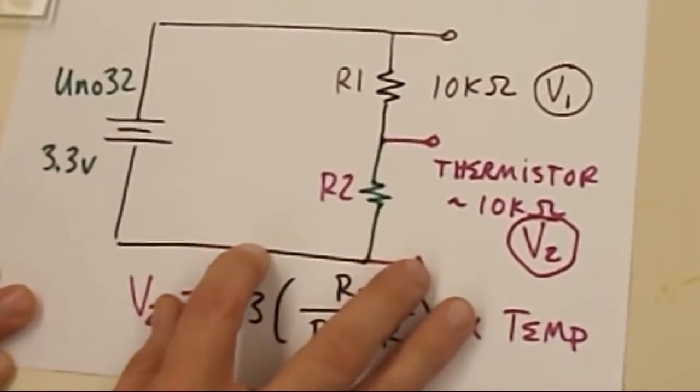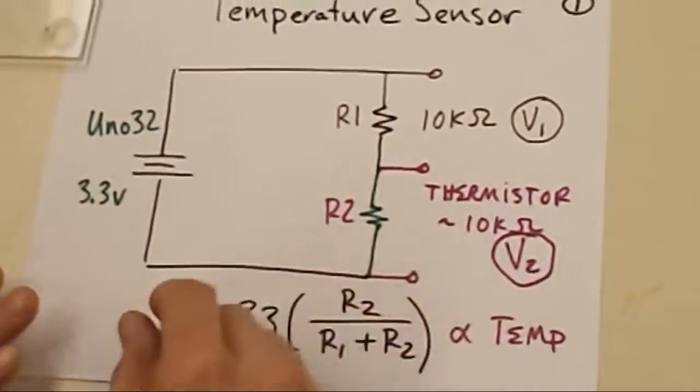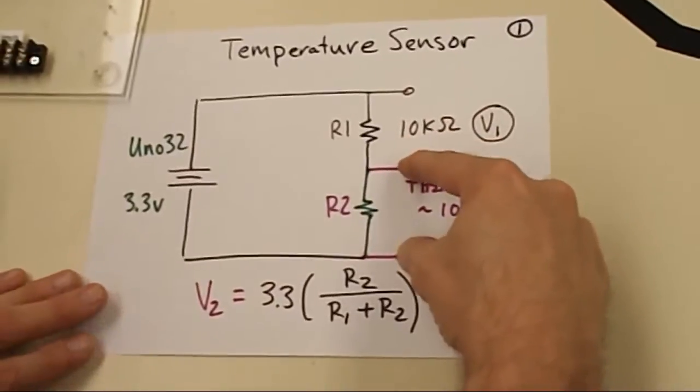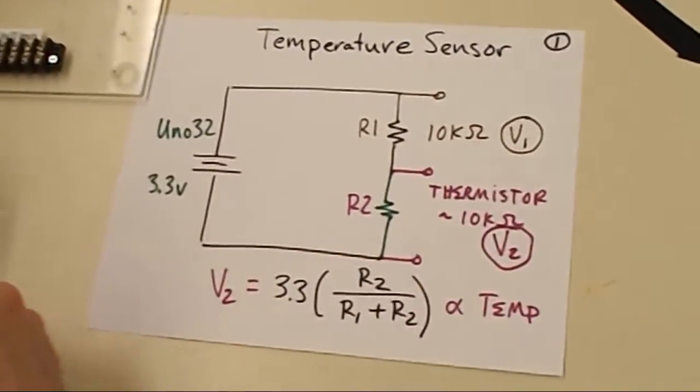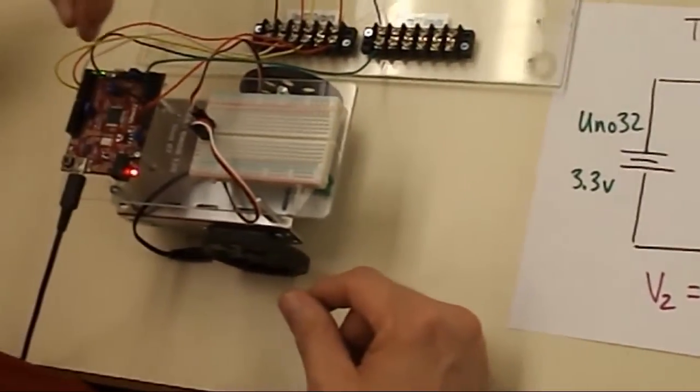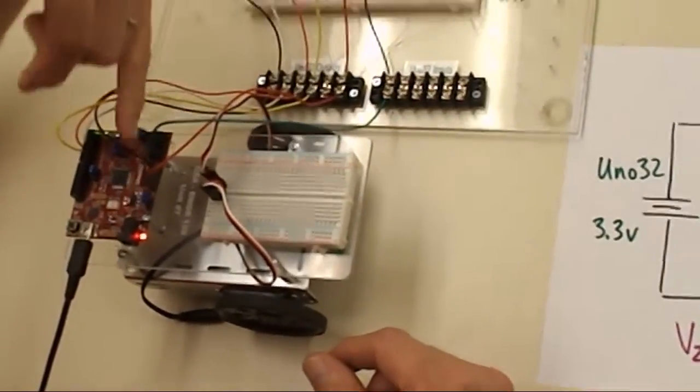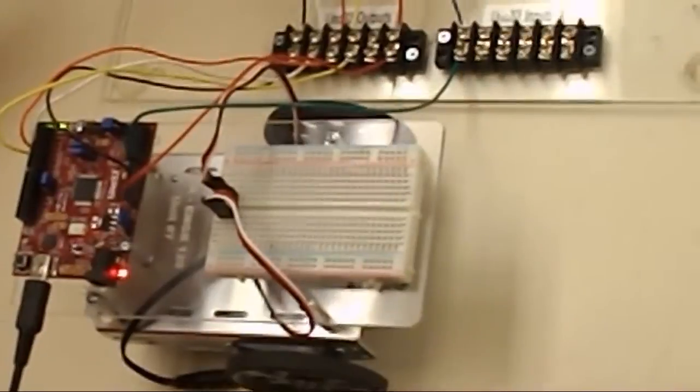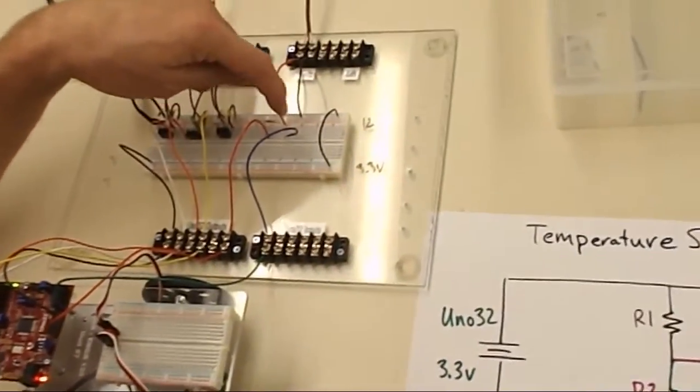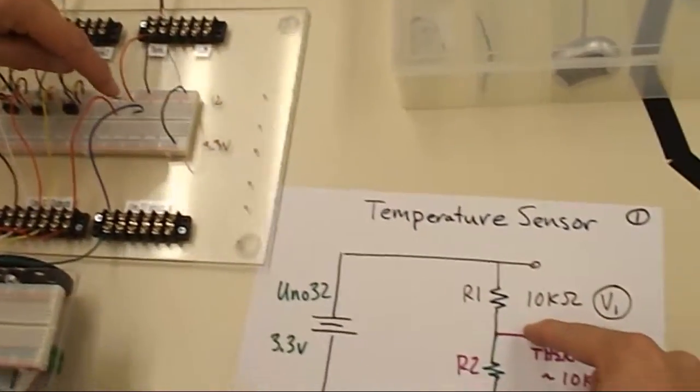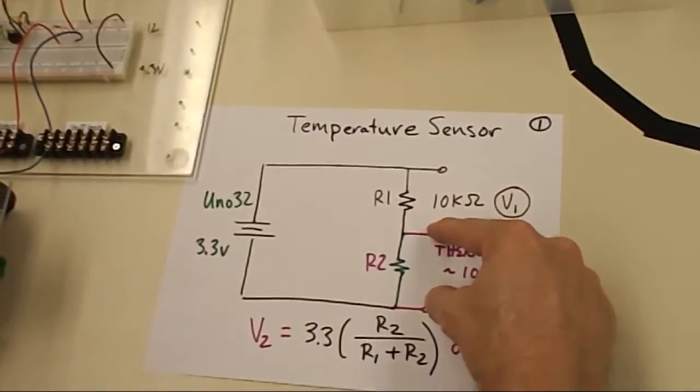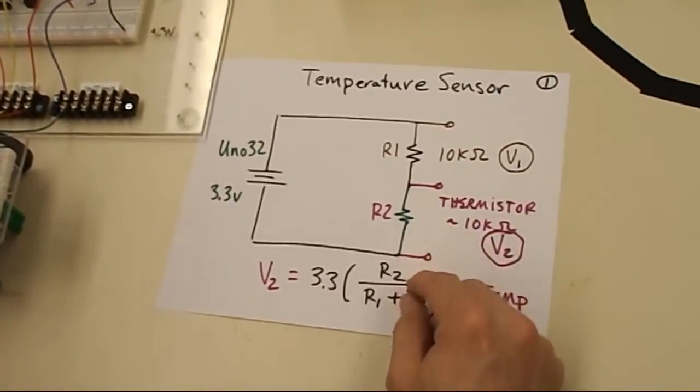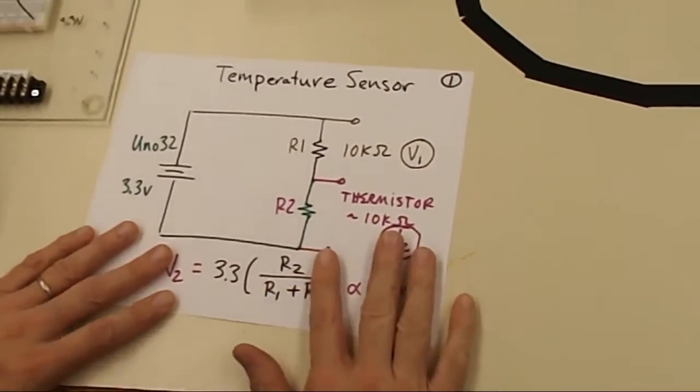So just to review this one more time, we came out of the 3.3 volt source through the first resistor and that passed on through the thermistor and then back to ground. So we completed this two resistor series circuit and the piece that we didn't talk about was this voltage measurement right here. So the analog read command is going to be used and it's connected to A0 in this case and that is tied to the midpoint on the two resistors.